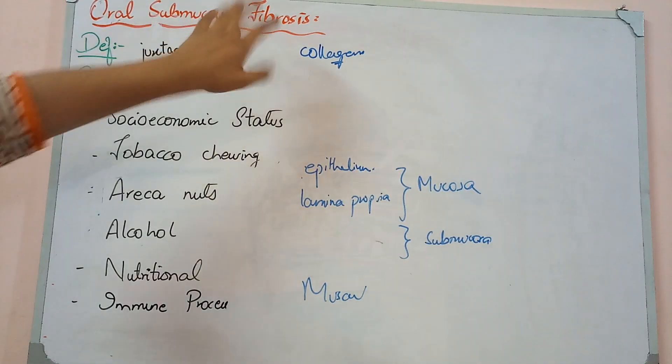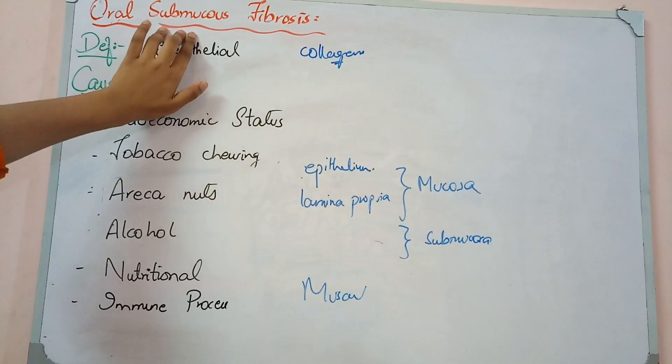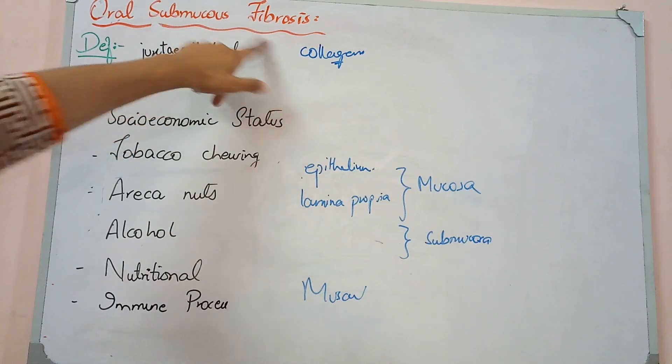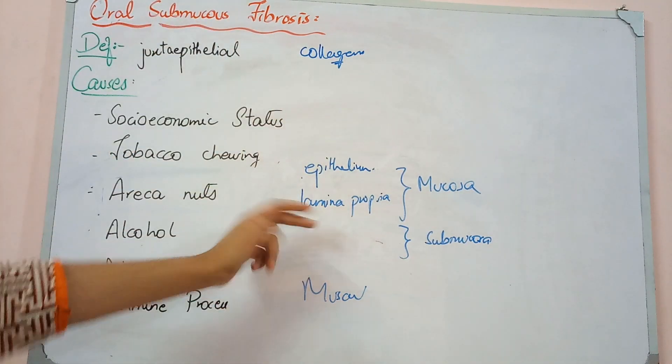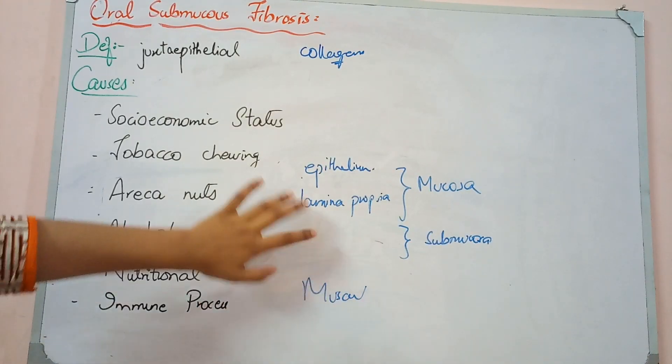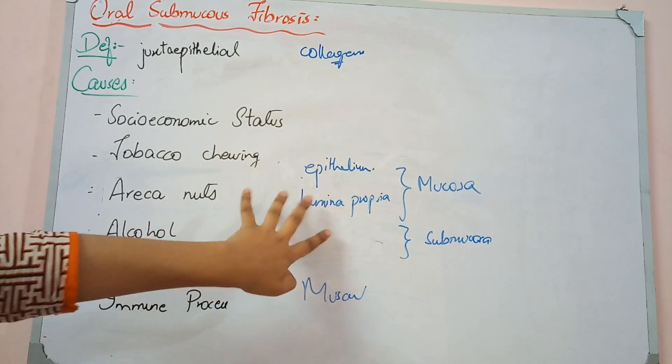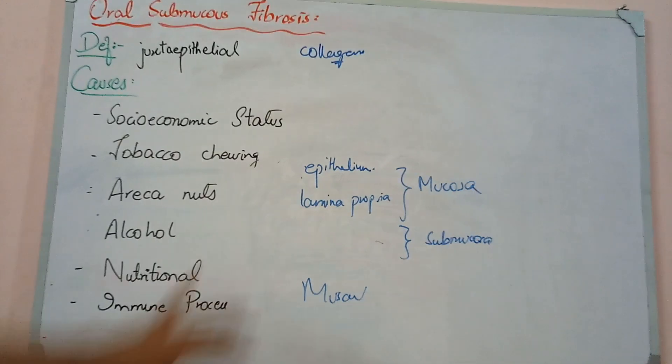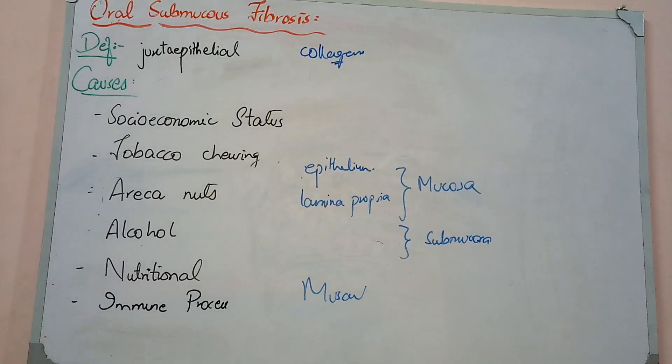Submucous fibrosis is basically increased deposition of fibrosis in the submucosa, meaning both lamina propria and submucosa. In oral cavity, we consider both because both are connective tissue. What happens in oral cavity? There is normally a balance of collagen and elastic fibers.